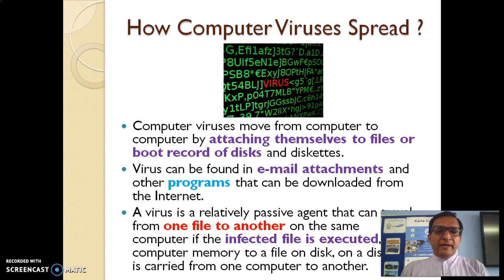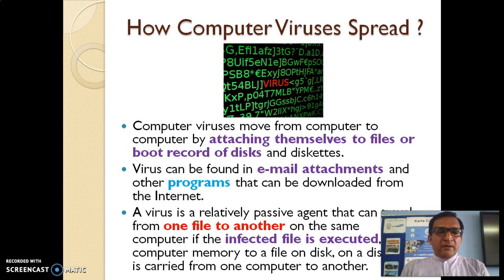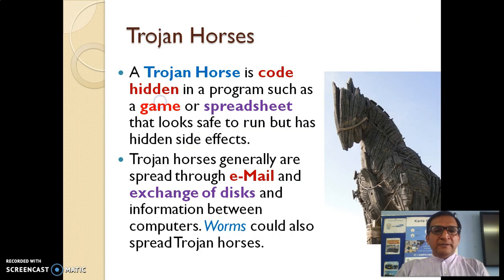A computer virus needs a carrier and spreads through external action. Viruses move from computer to computer by attaching themselves to files, boot records of disks, diskettes, or pen drives. Viruses can also be found in email attachments and programs downloaded from the internet — very common in games. A virus is a relatively passive agent and can travel from one file to another on the same computer when an infected file is executed.